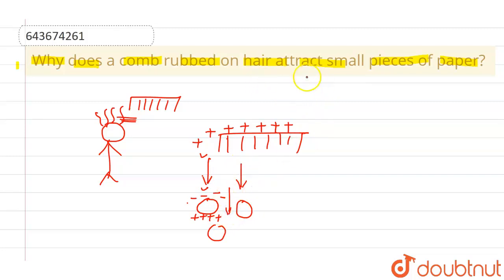So that's why these small papers are attracted towards the comb because of the charging due to friction. When you rub the comb on dry hairs, due to some heat this particular comb is charged. Even the hairs are also charged, but due to the conducted nature of human body, all the charge goes into earth.